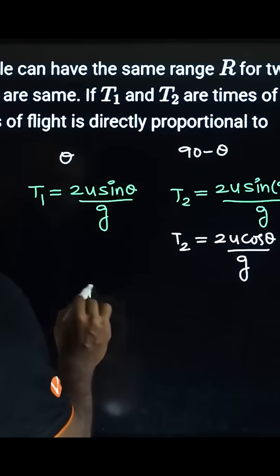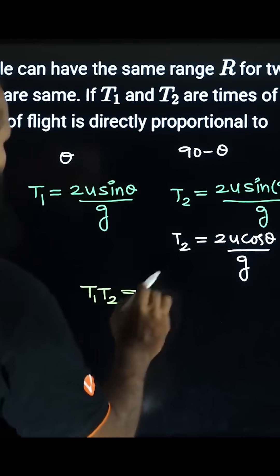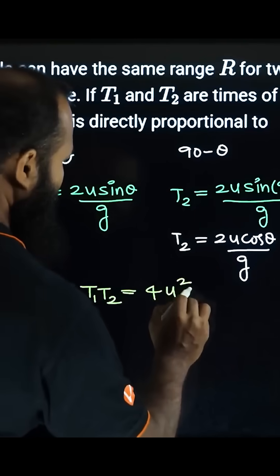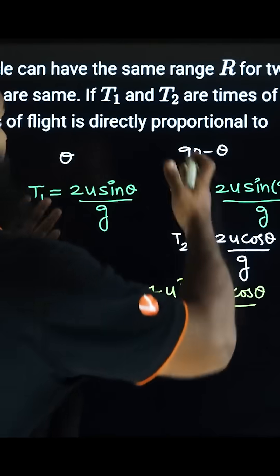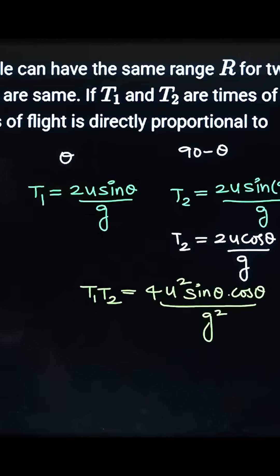Multiplying T₁ and T₂: 2 times 2 gives 4u² sin θ cos θ over g². Since T₁ and T₂ are times of flight, the product is directly proportional to R.